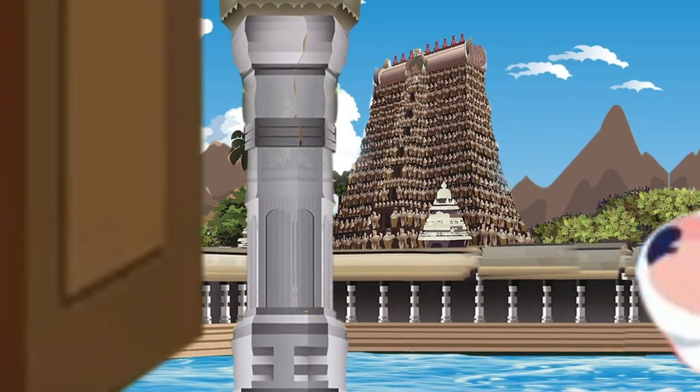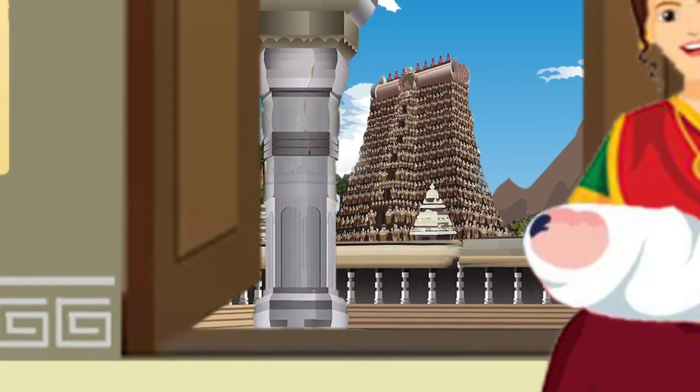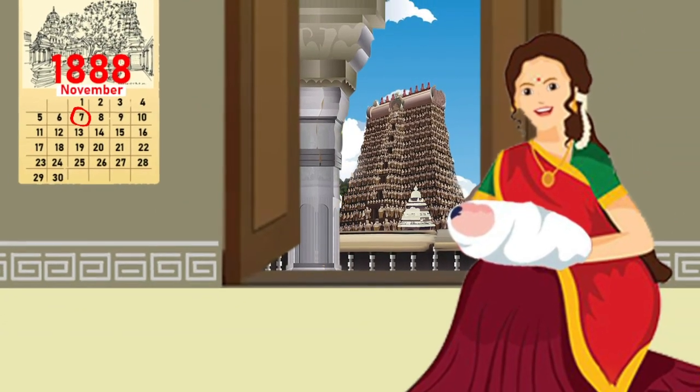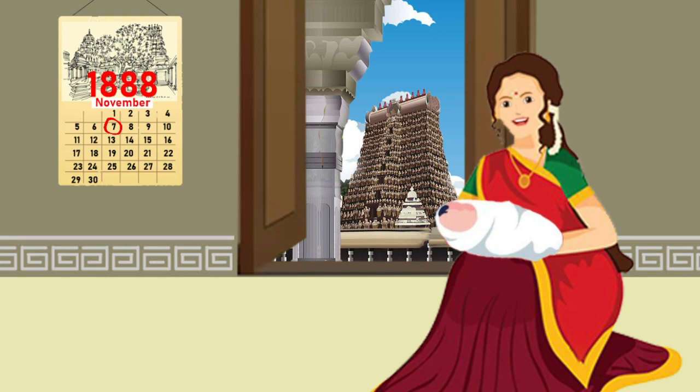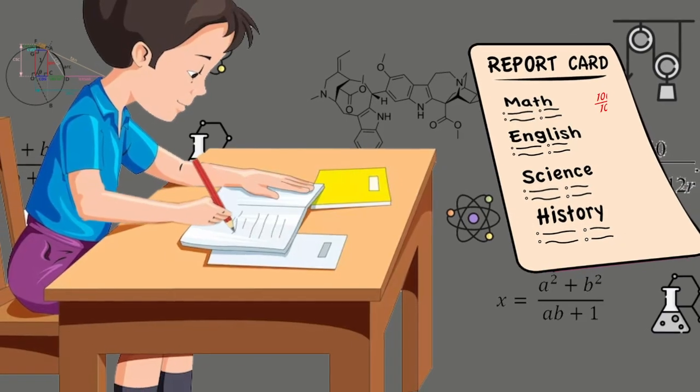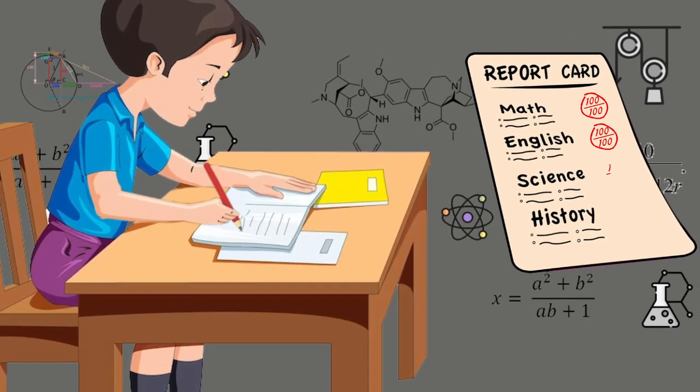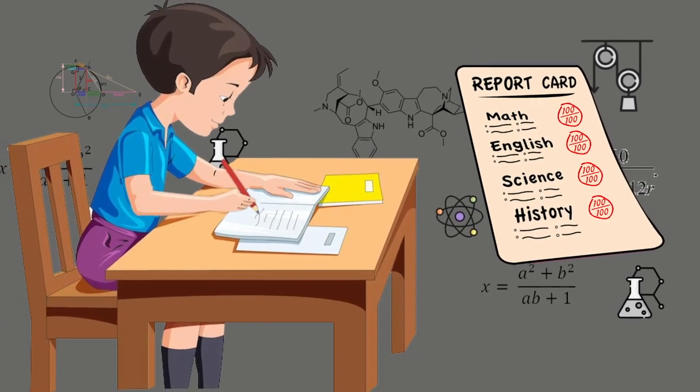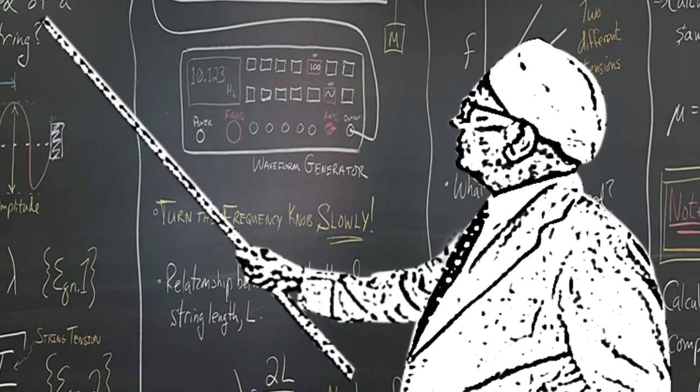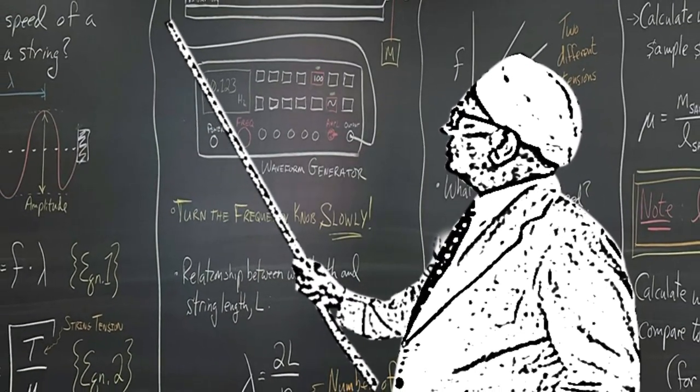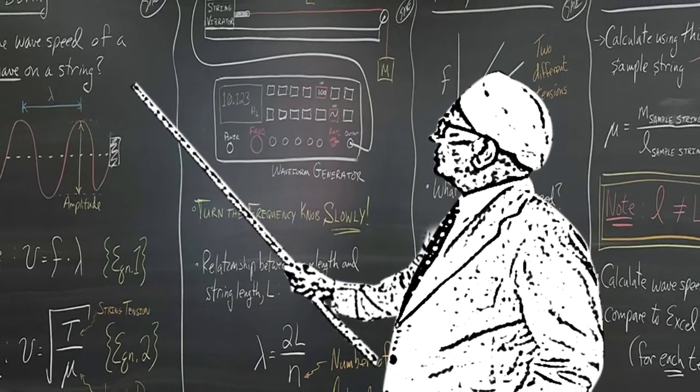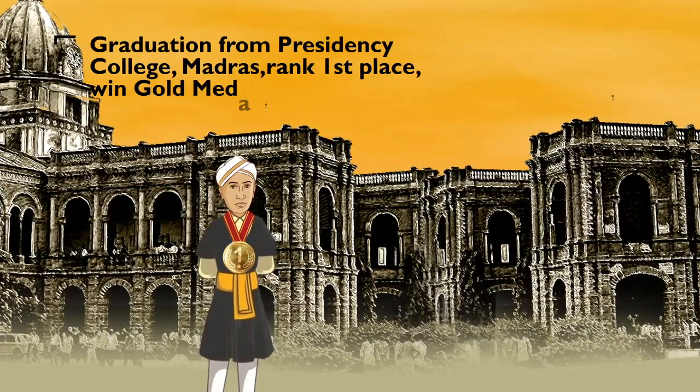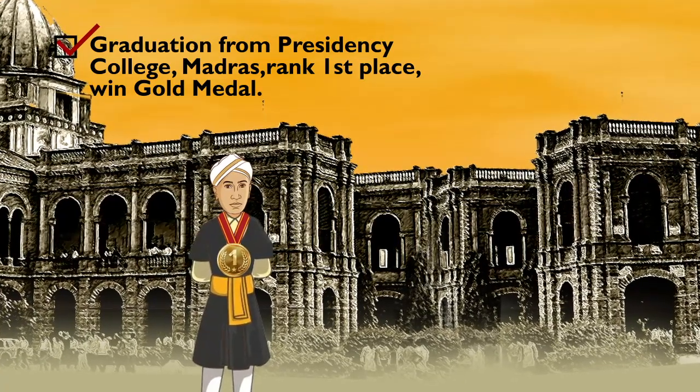Chandrasekhara Venkata Raman was born at Tiruchirapalli in Southern India on November 7th, 1888. He was an extraordinary student and got an inheriting education in physics. His father was a lecturer in mathematics and physics. At the little age of 15 years, he graduated with first place and gold medal in physics from Presidency College, Madras.